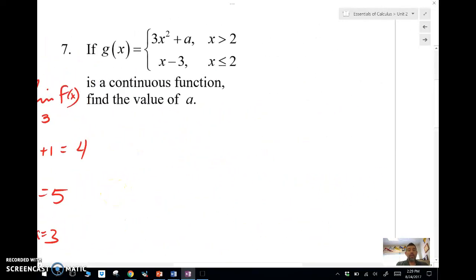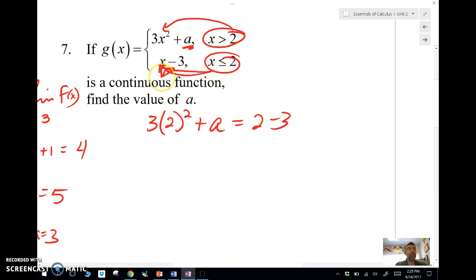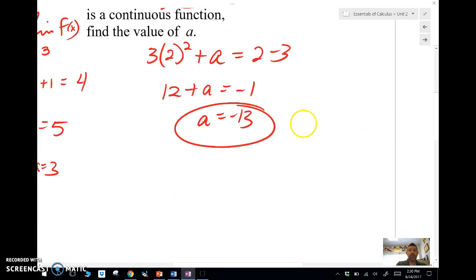Let's look at number 7 here. We've got a function g of x that is a continuous function. Find the value of a. The easiest way, anytime we have this type of continuous function question where we're trying to find the value in there, is to take the cut point, whatever the cut point is, plug it in to each value of X in the corresponding equation there. So I'm going to have 3 times 2 squared plus a, and I'm going to set it equal to the other one there, 2 minus 3. So then I'm going to have 12 plus a equals negative 1, and a is negative 13. That's all there is to that. You plug in each of them, set it equal to one another, and find your variable a.